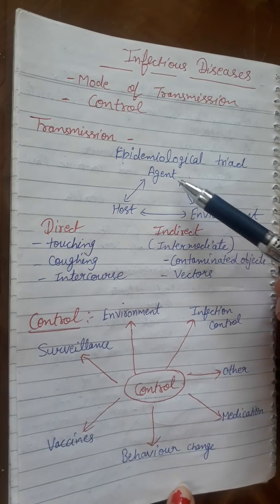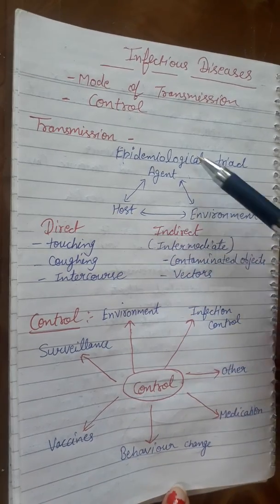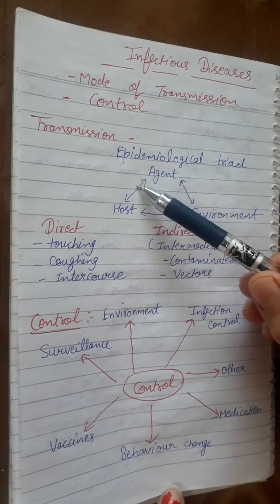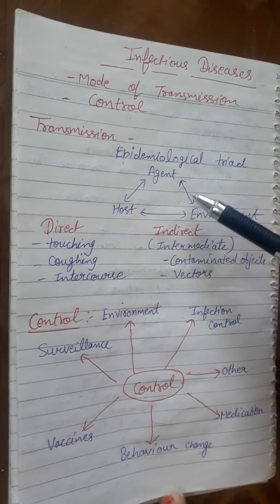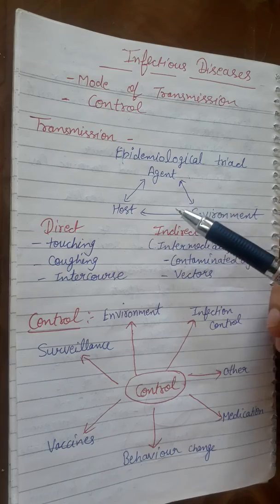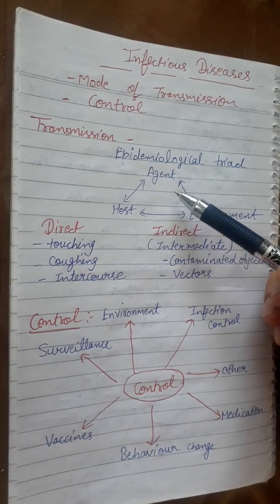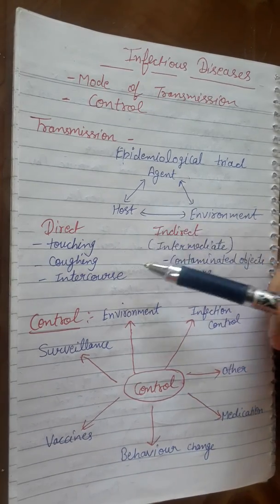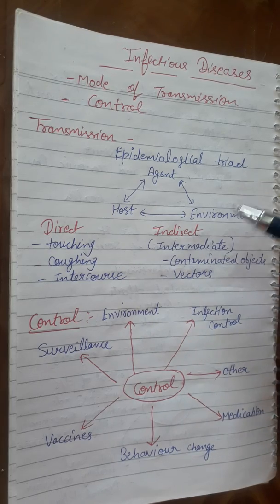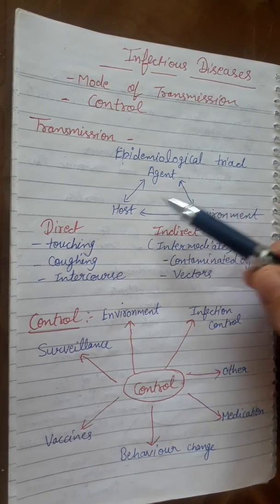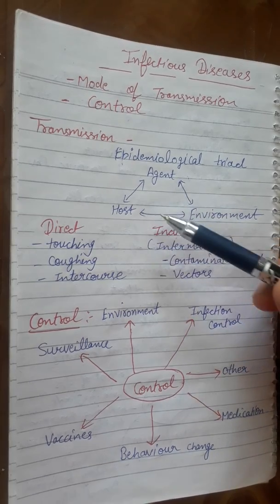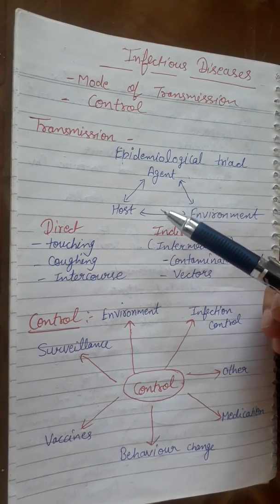It has agent, host, and environment — this is called the epidemiological triad. These three are important for the transmission of any infectious disease. The agent can be bacteria, viruses, or parasites; the host can be a human being or animal; and the environment helps transmit the disease through the agent to the host.